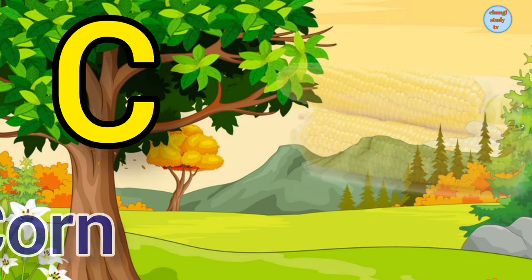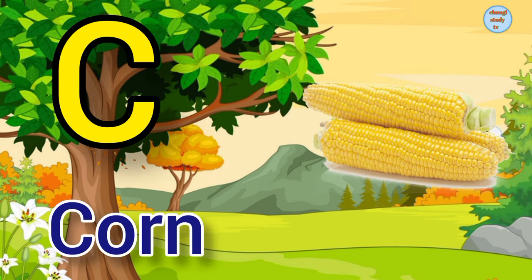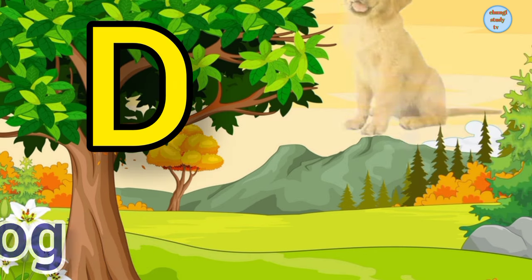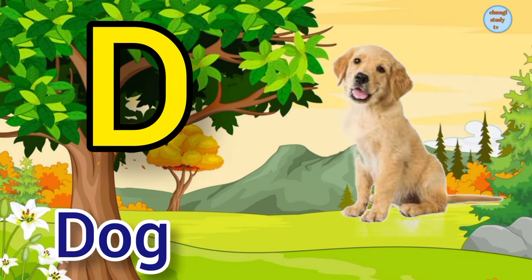C. C for corn, corn means makka. D. D for dog, dog means kutta.